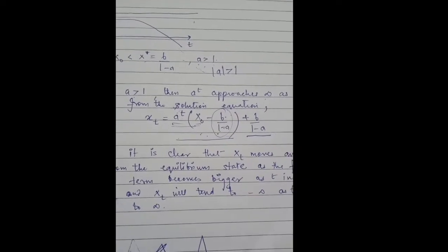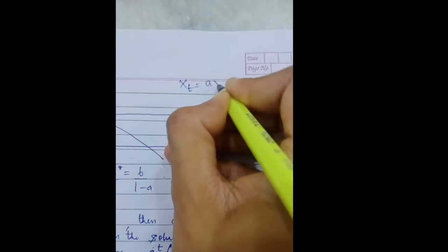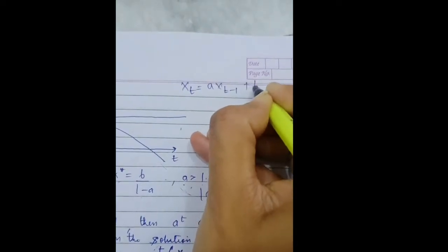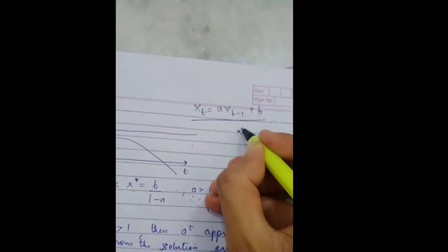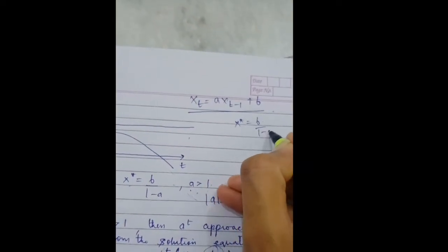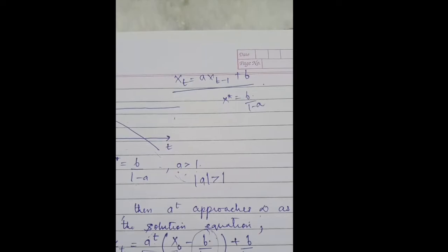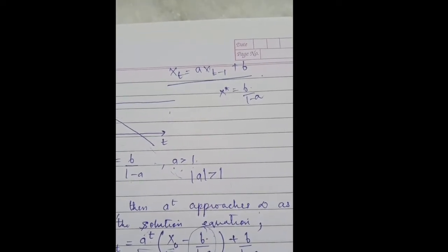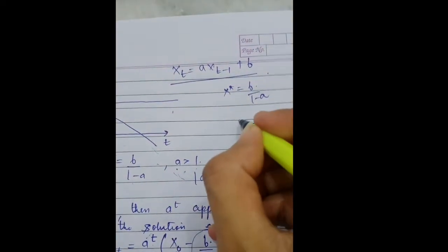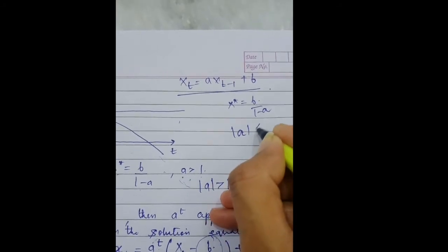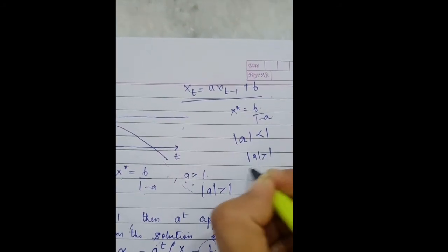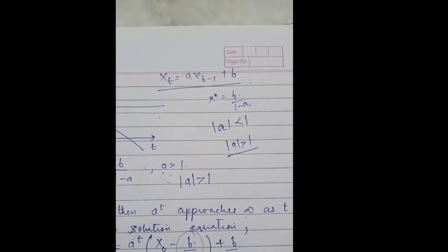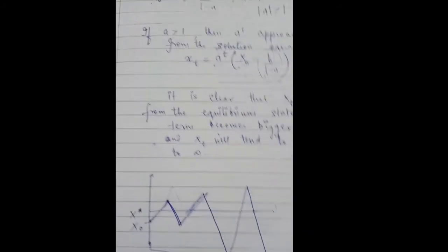To conclude, for a difference equation of the form xt = a·xt-1 + b, the equilibrium value is b upon 1 minus a. You will only reach the equilibrium when the mod value of a is less than 1. For mod value of a greater than 1, you will never reach the equilibrium because of the two diverging cases discussed.